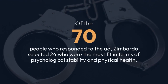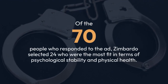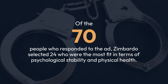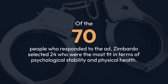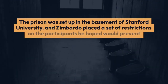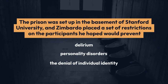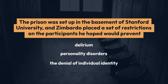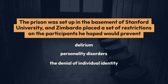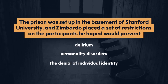Of the 70 people who responded to the ad, Zimbardo selected 24 who were the most fit in terms of psychological stability and physical health. Most of them were white, male, and middle class, and they were all undergraduate students. The group was randomly divided into two equal groups: prisoners and guards.